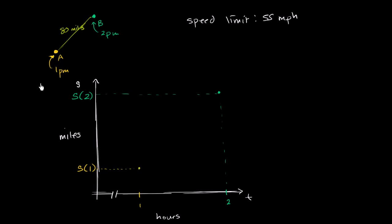And we know what our change in position is. We know that our change in position, which is equal to S(2) minus S(1), is equal to 80 miles. The change in position is 80 miles. And we'll just, for simplicity, assume it's a straight highway, so our change in distance is the same as our change in position, same as change in displacement. So this is 80 miles.